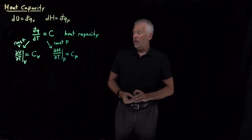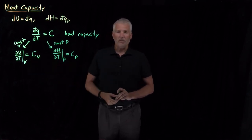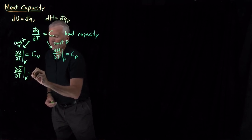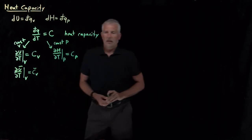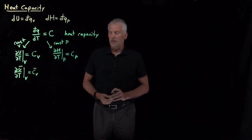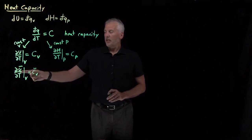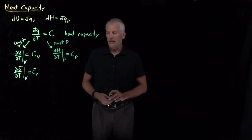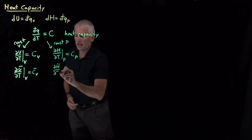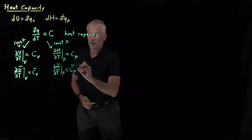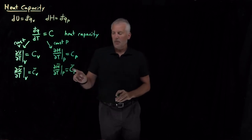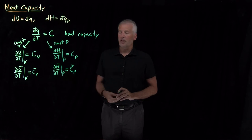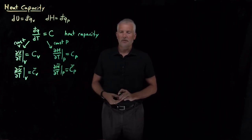We've got these expressions. These are both extensive properties — I've written U and H without a bar on top. If I prefer to think about intensive properties, I can divide both sides of the equation by the number of moles of material. Then I've got the change in molar energy with respect to temperature, which equals the molar constant volume heat capacity, Cv-bar. The constant pressure molar heat capacity, Cp-bar, is equal to the derivative of molar enthalpy with respect to temperature. Those are definitions of constant volume and constant pressure heat capacity, either the extensive or the intensive versions.